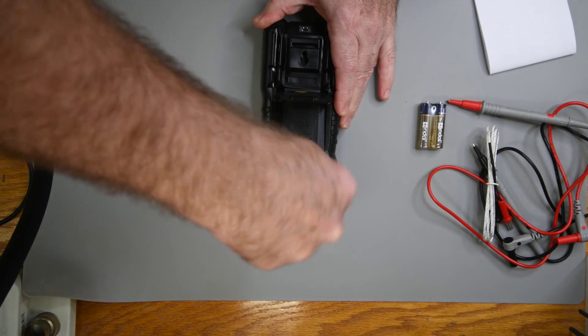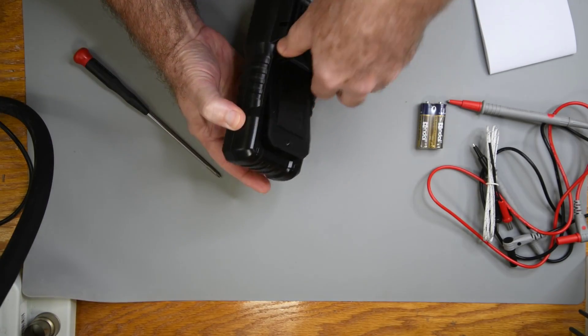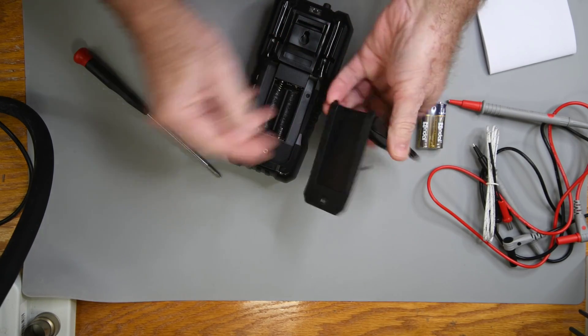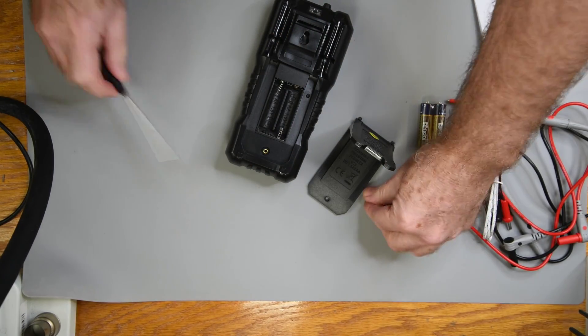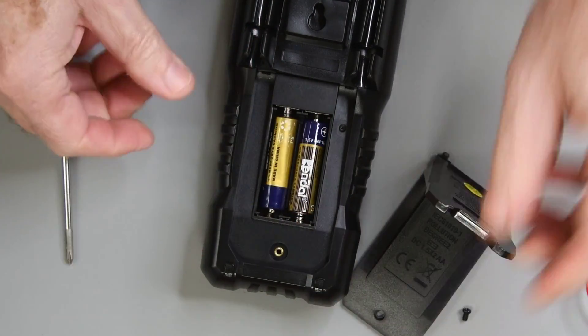Let me put the batteries in and see if it even works. One screw holds the battery door slash stand in place. That's nice, a metal insert for the battery door screw. I really consider that a bonus at this price point.